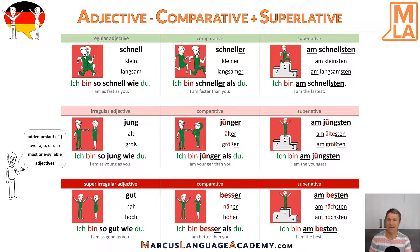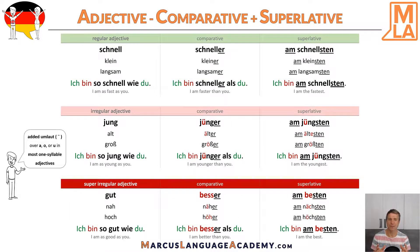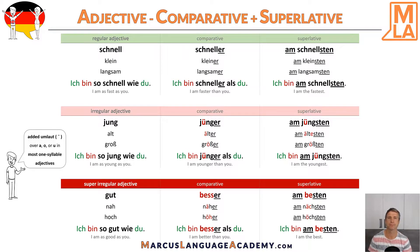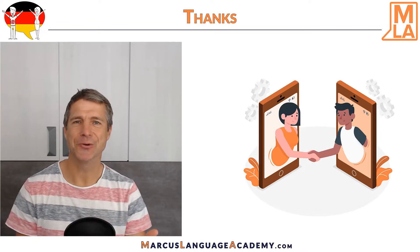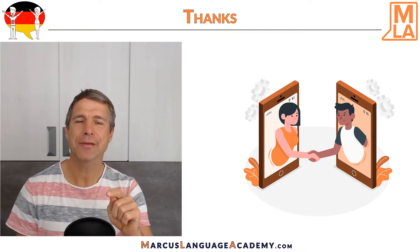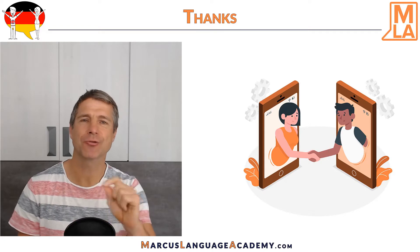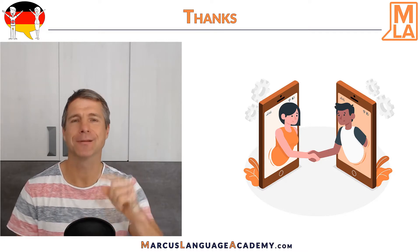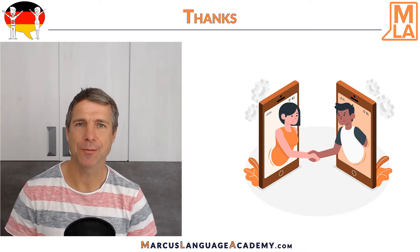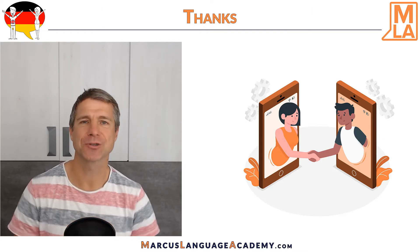And these are our adjectives and their comparative and superlative forms. Please remember that we do not use the word 'mehr', and that there are regular and irregular adjectives. I hope you enjoyed the video. Please make sure to subscribe to my channel and to activate the bell. I am Markus from Markus Language Academy, and thank you very much for watching my video.